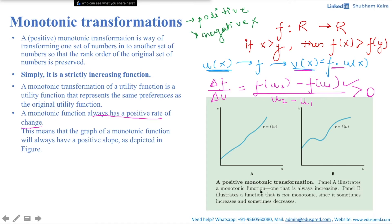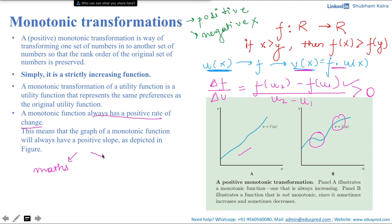Panel A illustrates a monotonic transformation — one that is always increasing. Panel B illustrates a function that is not monotonic since it sometimes increases and sometimes decreases. You have two approaches to check monotonicity: simple maths, where you calculate the expression and see if it's positive (though that would be cumbersome), or the calculus approach, which is recommended.